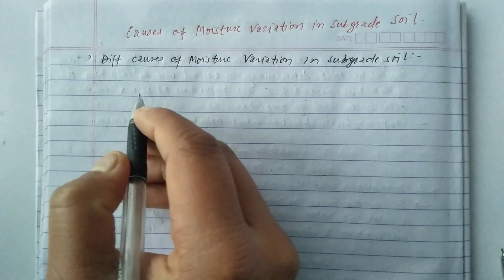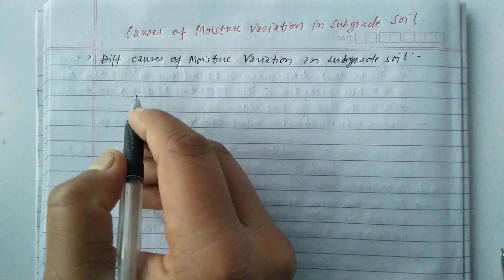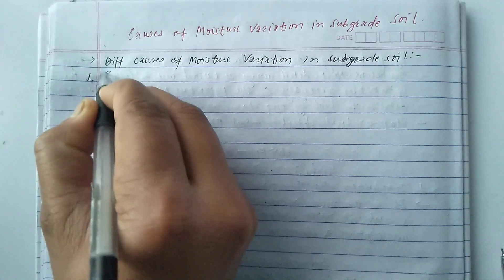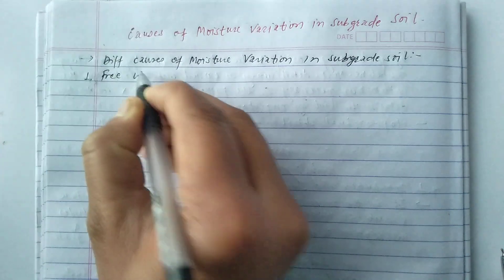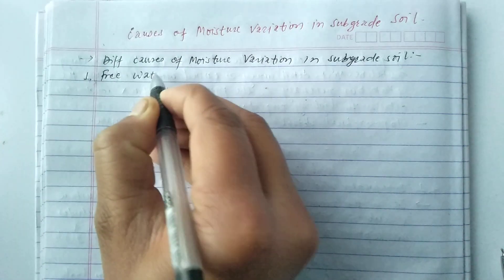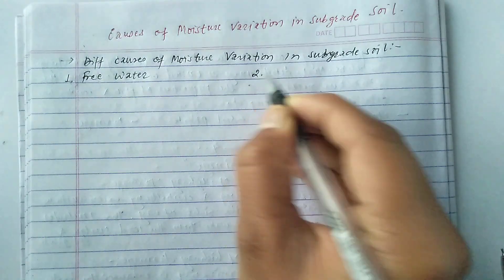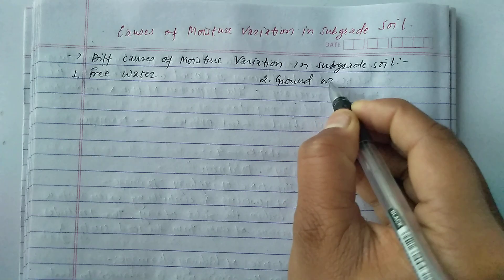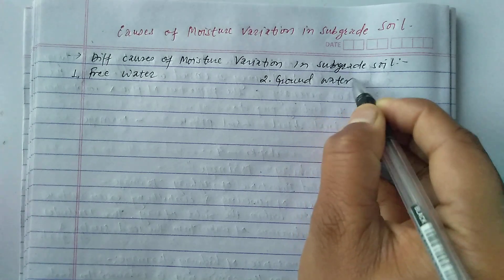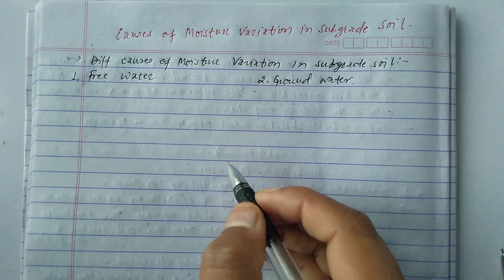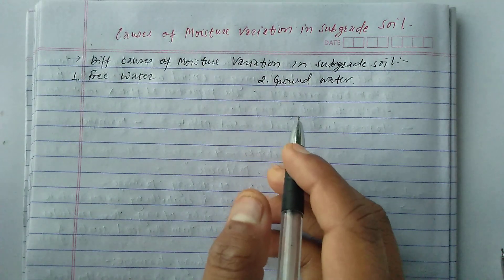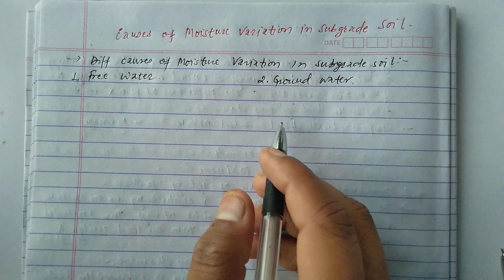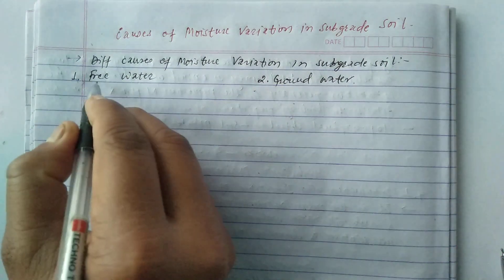Basically, we have two main causes of moisture variation in subgrade soil. The first one is free water causes, and the second is groundwater.